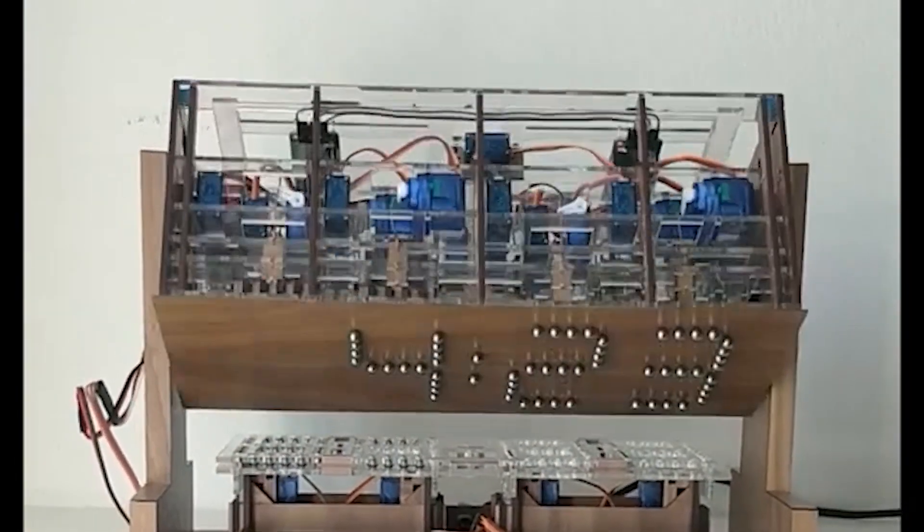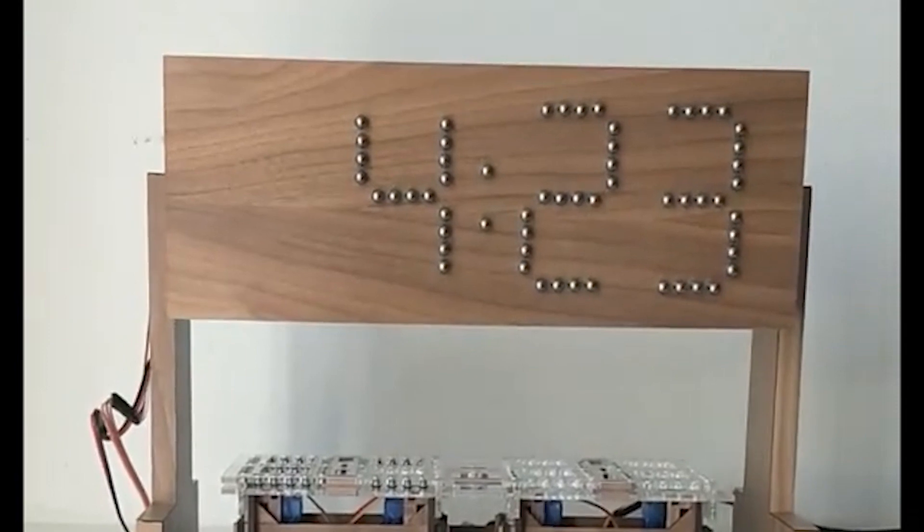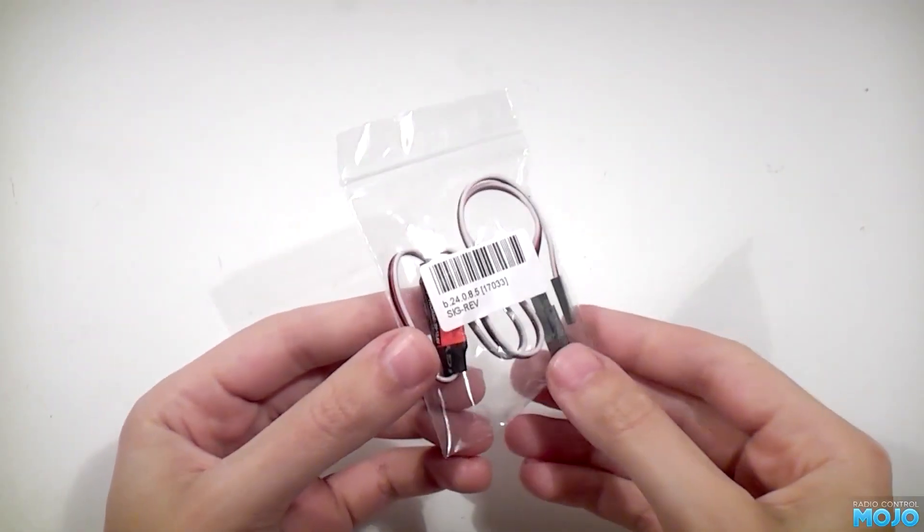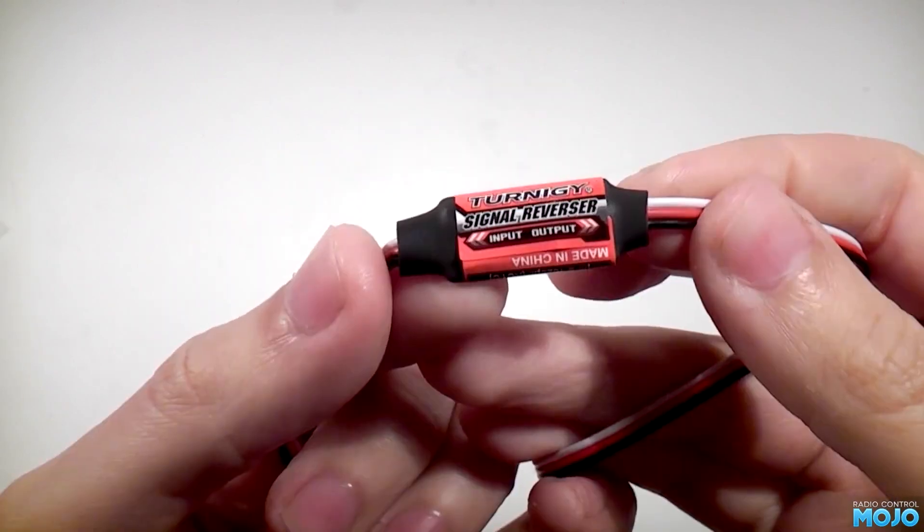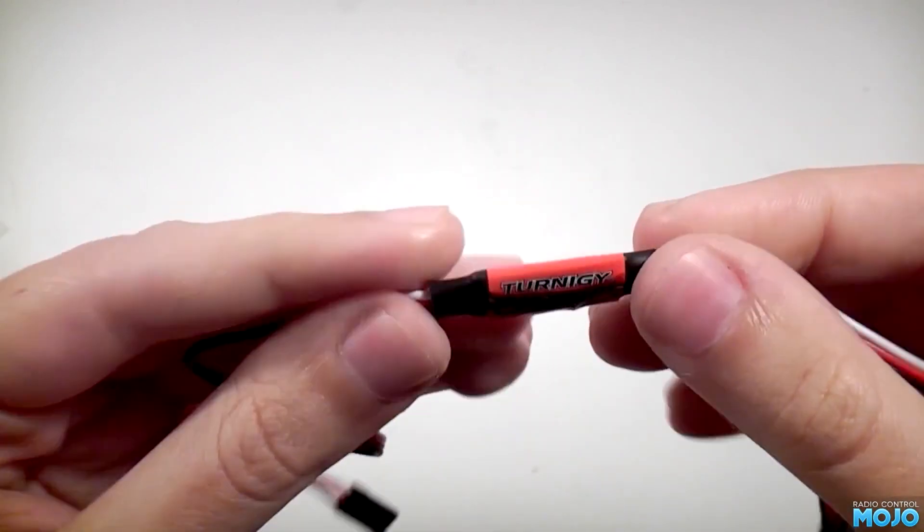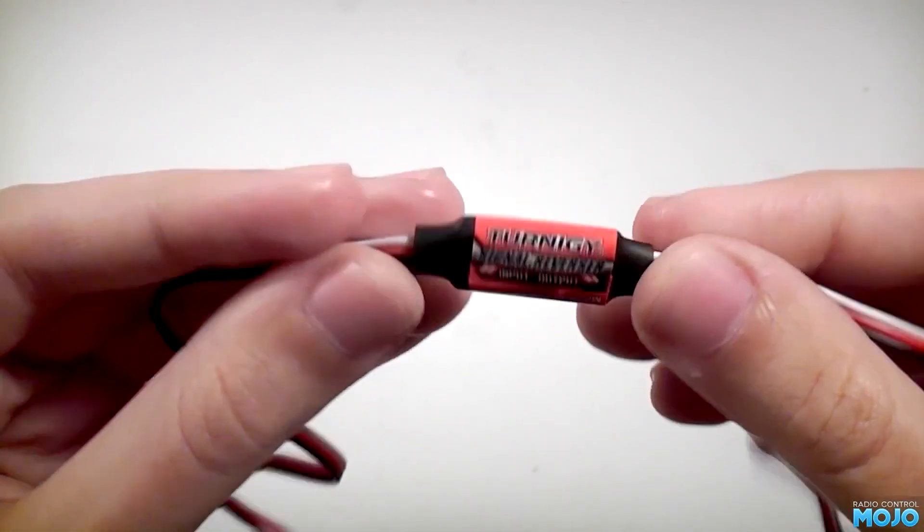One tip I picked up from this project is how to make use of servo signal reversers. I'd never heard of them before, but they seem to be common in RC projects. It's just a bit of hardware, wired in line with a servo that turns up the opposite way it's instructed.